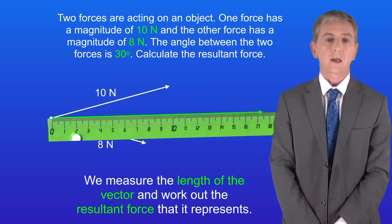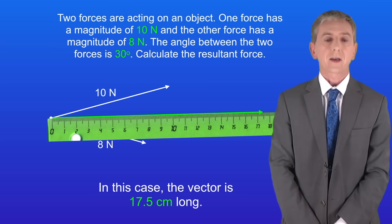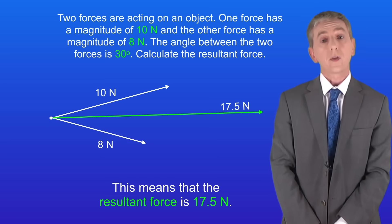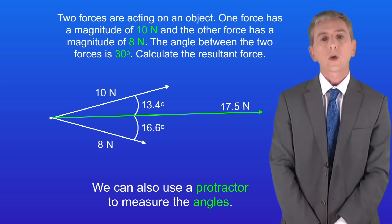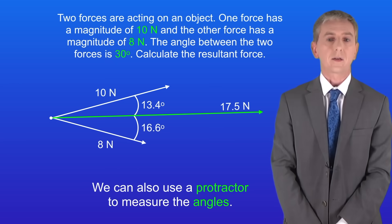Finally we measure the length of the vector and work out the resultant force that this represents. In this case the vector is 17.5 centimeters long, so this means that the resultant force is 17.5 newtons. We can also use a protractor to measure the angles, and here they are.